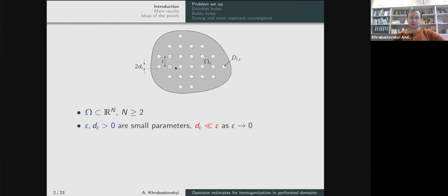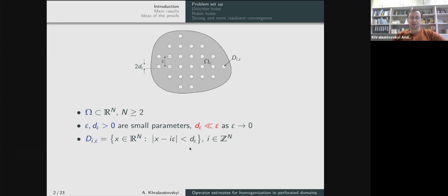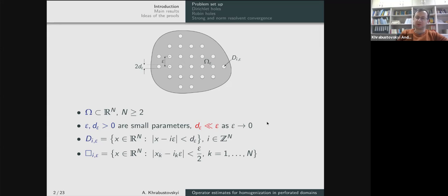We simplify by considering a periodic distribution of holes, though results can also be obtained for more general distributions. The first parameter epsilon is the period — the distance between neighboring holes. The other small parameter d_epsilon stands for the radius of the holes. We assume for simplicity that the holes are just balls, though one can consider holes of any shape. So we have balls of radius d_epsilon periodically distributed in space.